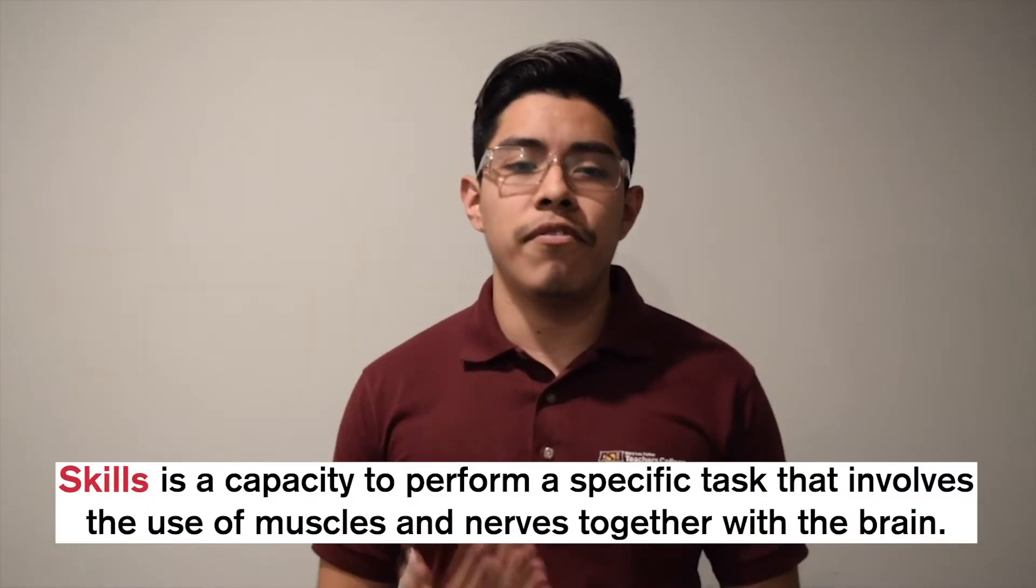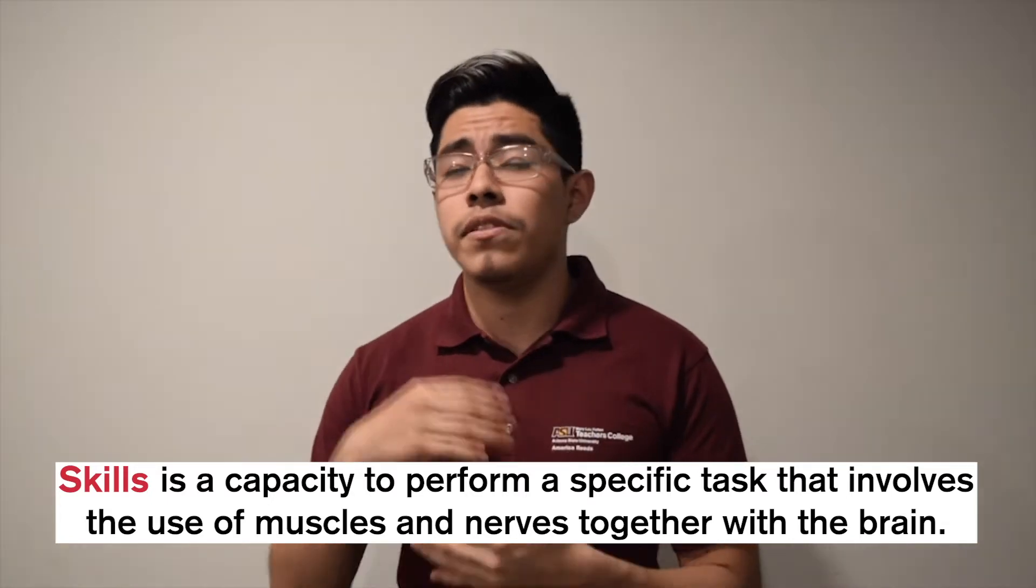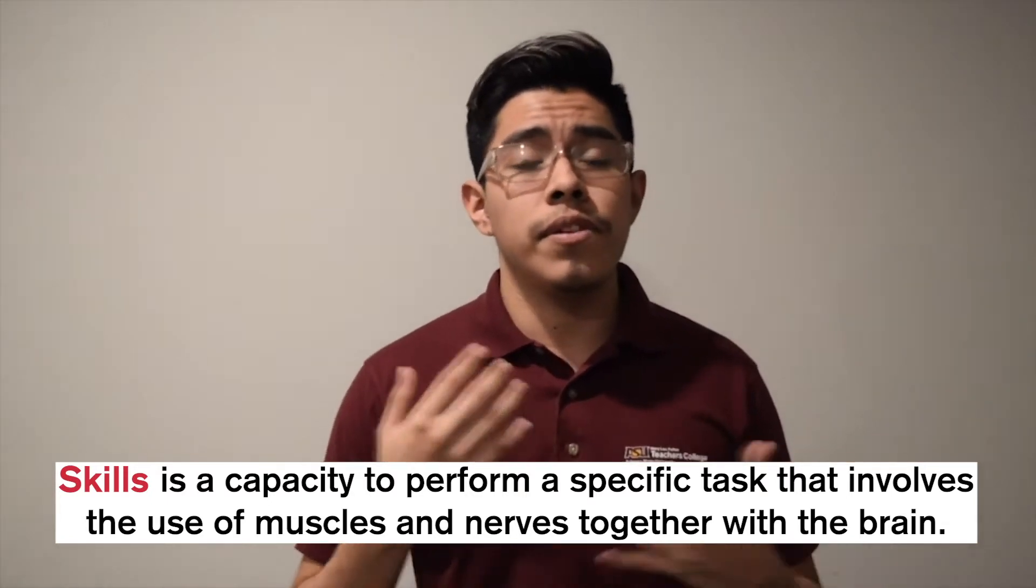So skills. Skills is a capacity to perform a specific task that involves the nerves and also with the brain. So for example, everyone has different skills in order to achieve something like jumping, running, throwing. Like there are different skills in every sport, and everyone has different skills in order to achieve the sport or activity that they have.